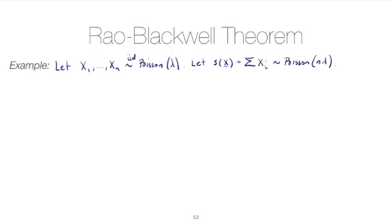So let's start out with a random sample from the Poisson distribution with rate parameter lambda. And we will think about a sufficient statistic, the sum of the xi's. And we'll note that the sum of the xi's, we've shown this before, has a Poisson distribution with rate parameter n times lambda, where n is the number of values that we're summing up.